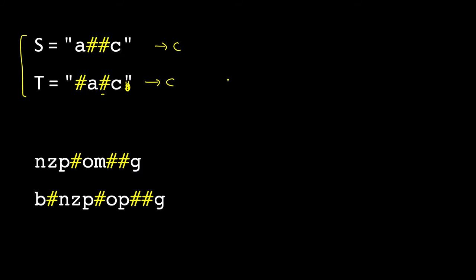The approach we will follow is to start from the end. We have one pointer at the end of S and one at the end of T. If neither character is a hash (backspace), we check if they are equal. If equal, we move both pointers left (decrement). Initially the index will be at length minus 1. These strings can be of different lengths.